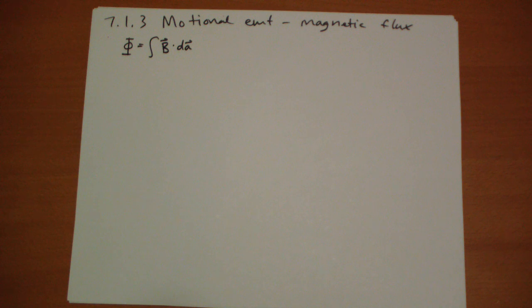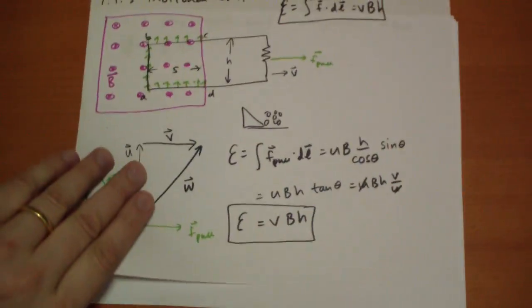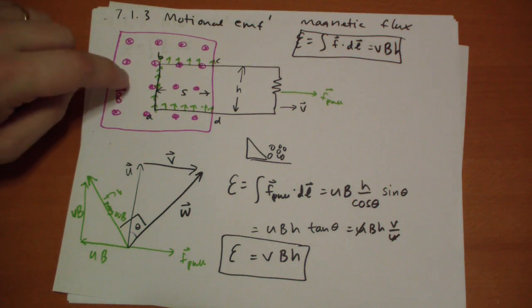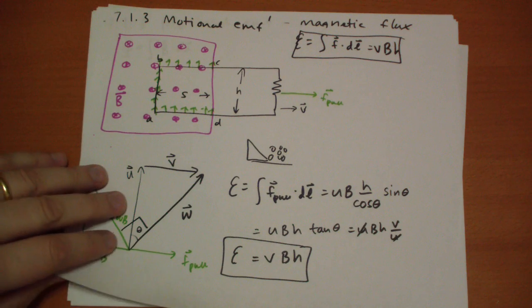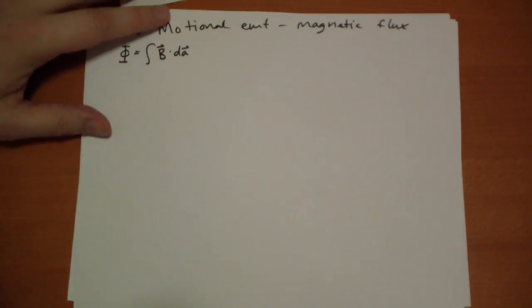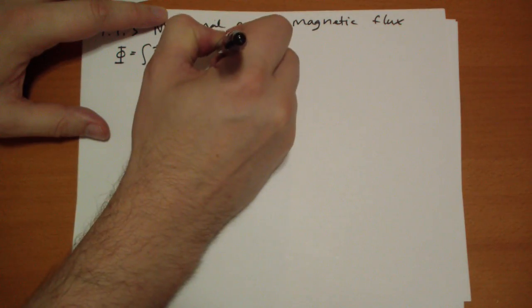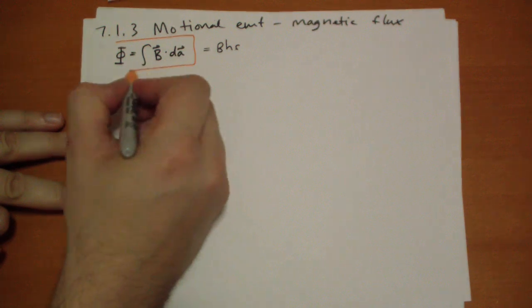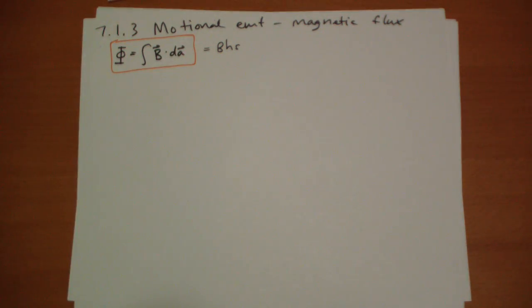So in our case, for our system, well, the area is HS, and the magnetic field is B, and they're perfectly perpendicular to each other, so it's just BHS. I'm going to put a box around this equation so you remember this is important.